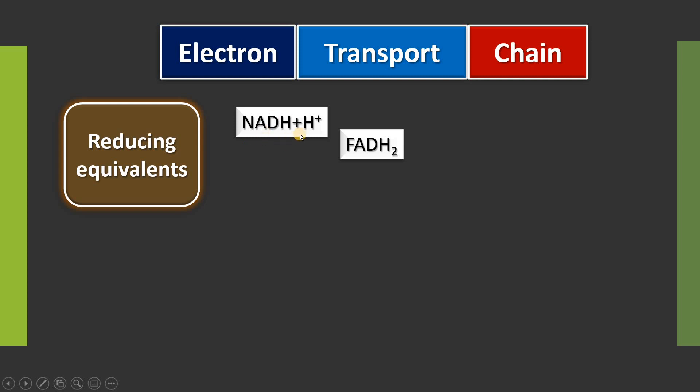Those reducing equivalents which are generated as a result of glycolysis — as we know, glycolysis takes place in the cytoplasm — will be transferred to the mitochondrial matrix. And in the TCA cycle, which already takes place in the mitochondrial matrix, it generates NADH plus H+ and also FADH2.